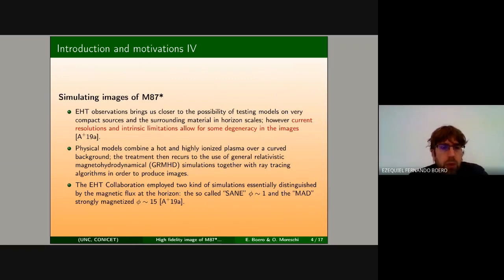The way in which those systems are usually studied are by combining hot and highly ionized plasma over a curved background in a strong gravity environment. Then one has to recur to the use of general relativistic magnetohydrodynamical simulations which are quite sophisticated and computationally demanding, supplemented with ray tracing algorithms in order to construct the images. The EHT collaboration employed two kinds of simulations, essentially distinguished by the properties of the magnetic flux at the horizon.